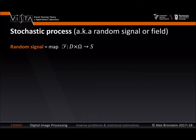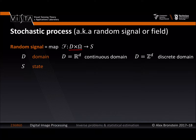D is called the domain of the signal. Ω gives us randomness. S is called the state of the signal. We distinguish between continuous domain ℝ^d and discrete domain ℤ^d — the same story as when signals were deterministic. I'm going to show everything today in the continuous domain, but the same rules apply in the discrete domain — we just replace integrals with sums. The range of this map is a space S called the state space, which can be vector-valued or scalar-valued, continuous or discrete.